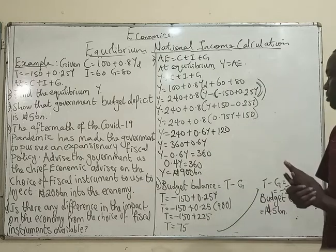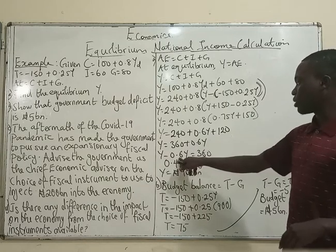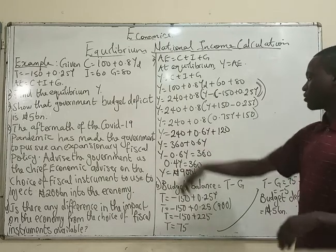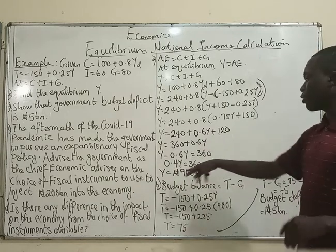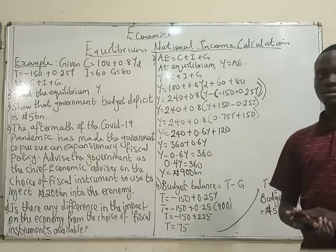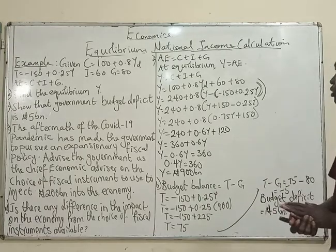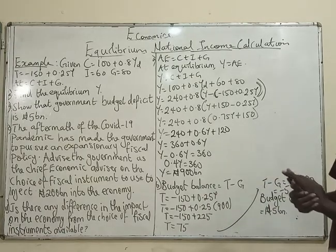Collecting like terms: Y minus 0.6Y equals 360, so 0.4Y equals 360, and therefore Y equals 900 billion. So our equilibrium national income is 900 billion from this particular question.